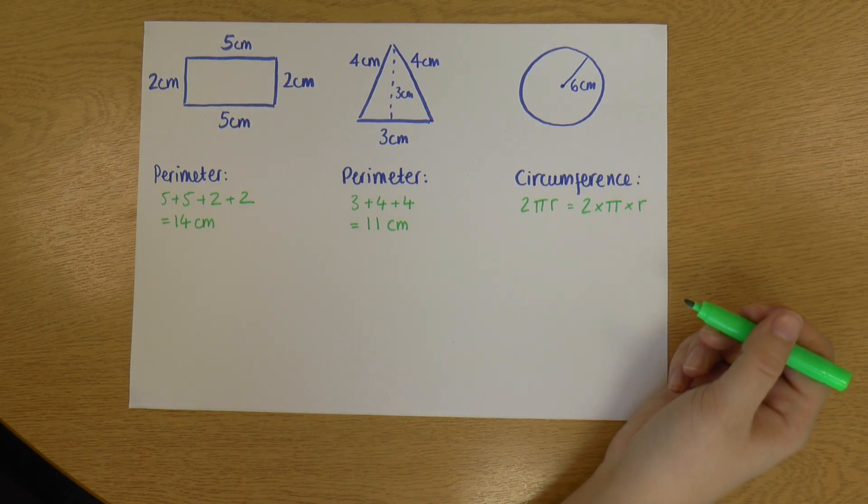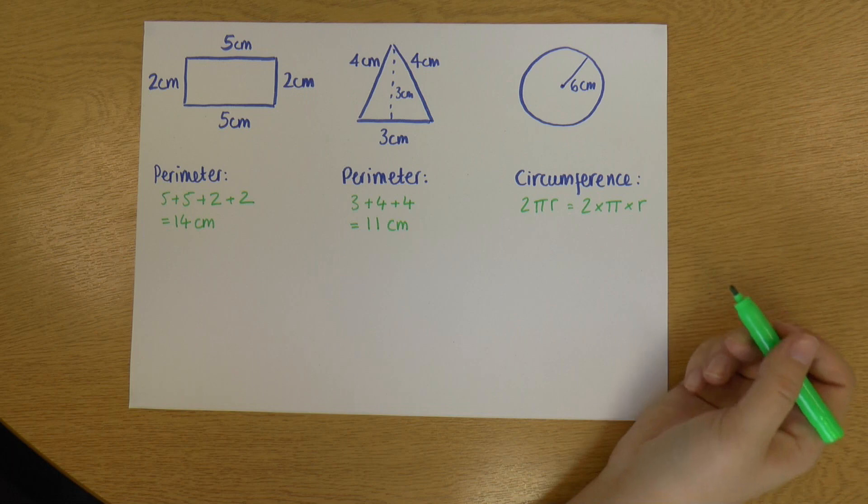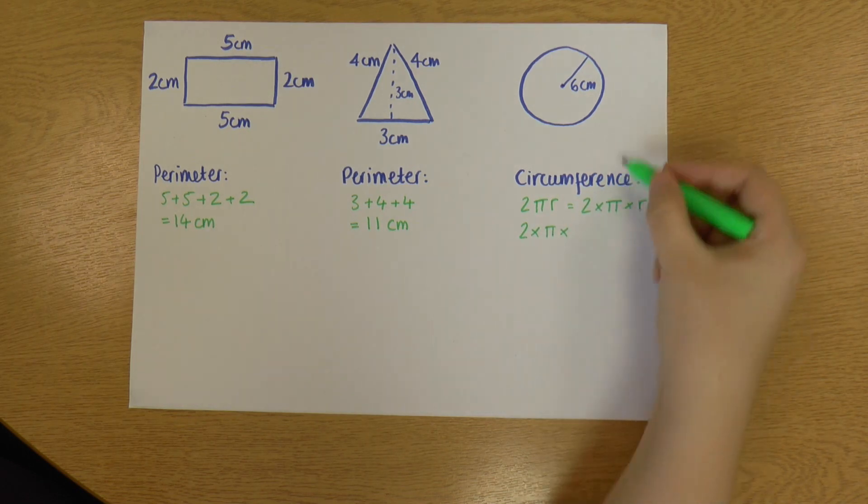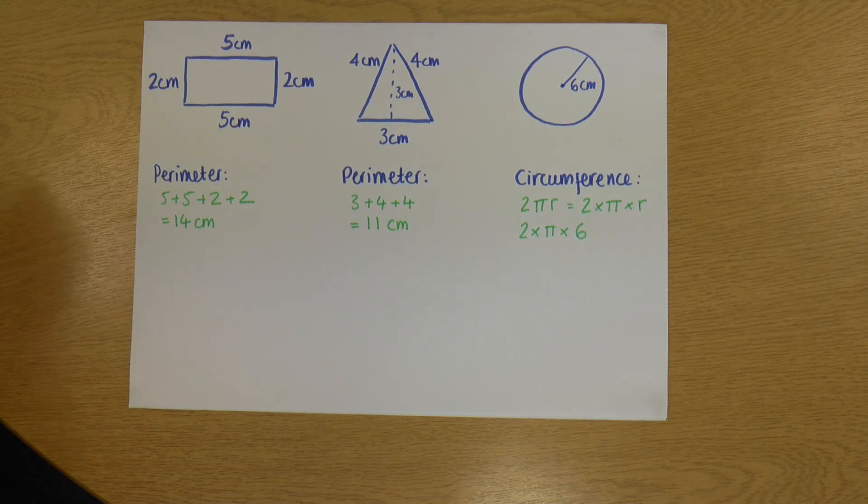So you have a π symbol on your calculator. But it's roughly 3.14 if you prefer to use that. So using 2 times π times the radius, my radius is six. That's the calculation we're doing.